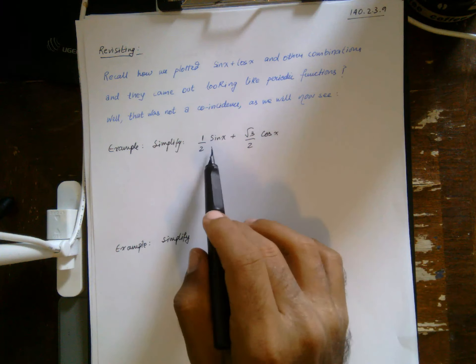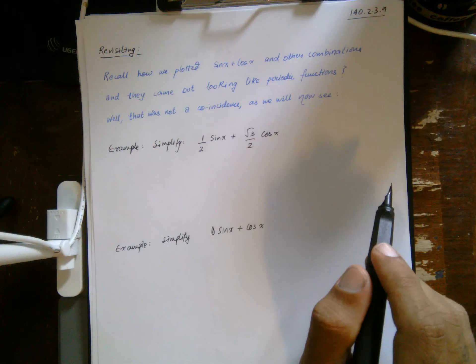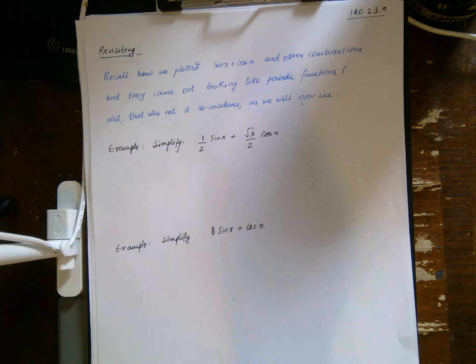Simplify one half sine x plus root 3 over 2 cosine x. Now at the face of it, this looks like, well, how am I going to do that?